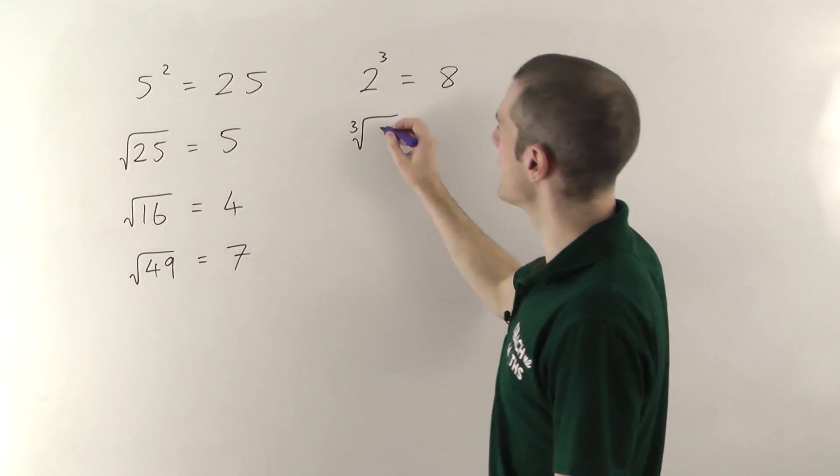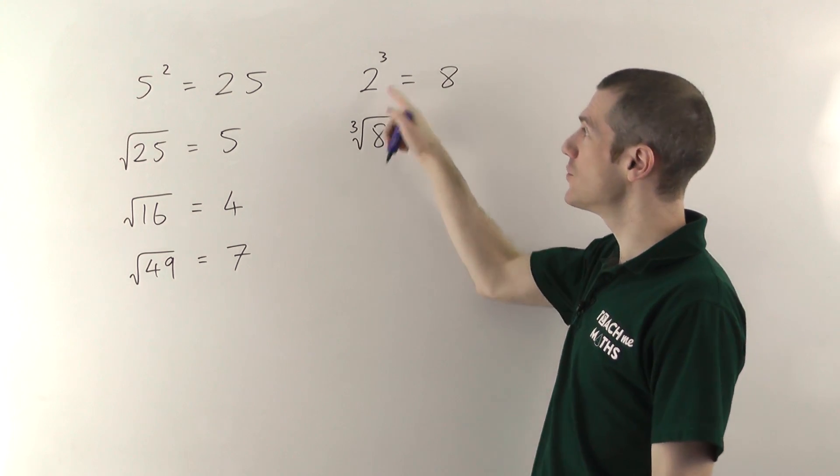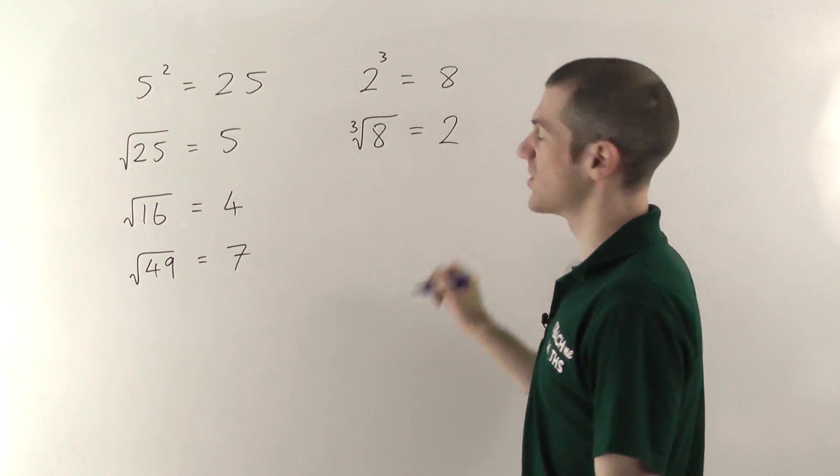So you would say this cube root of 8. Again cube rooting is the opposite of cubing. So if 2³ is 8, the cube root of 8 working backwards will just give you 2.